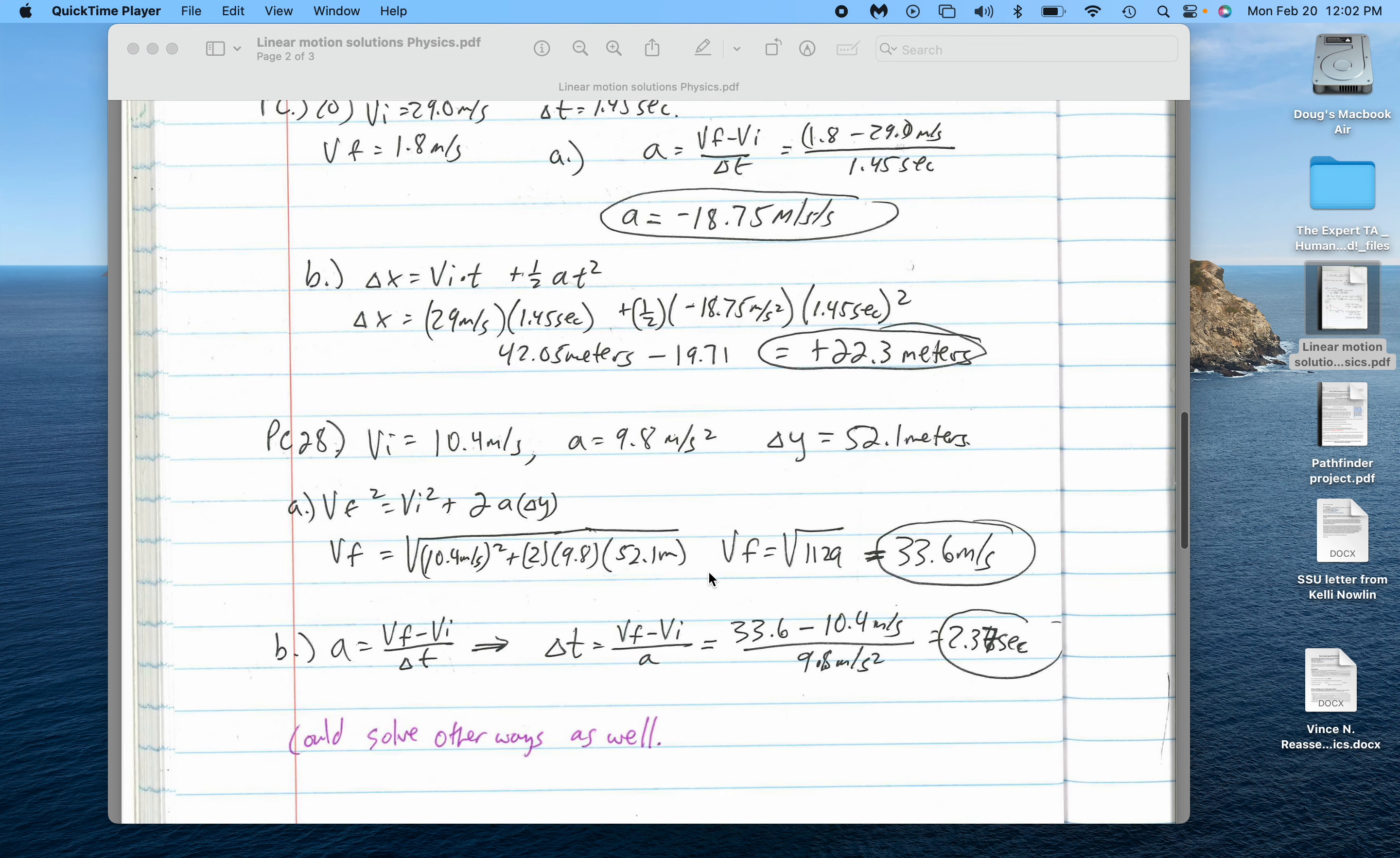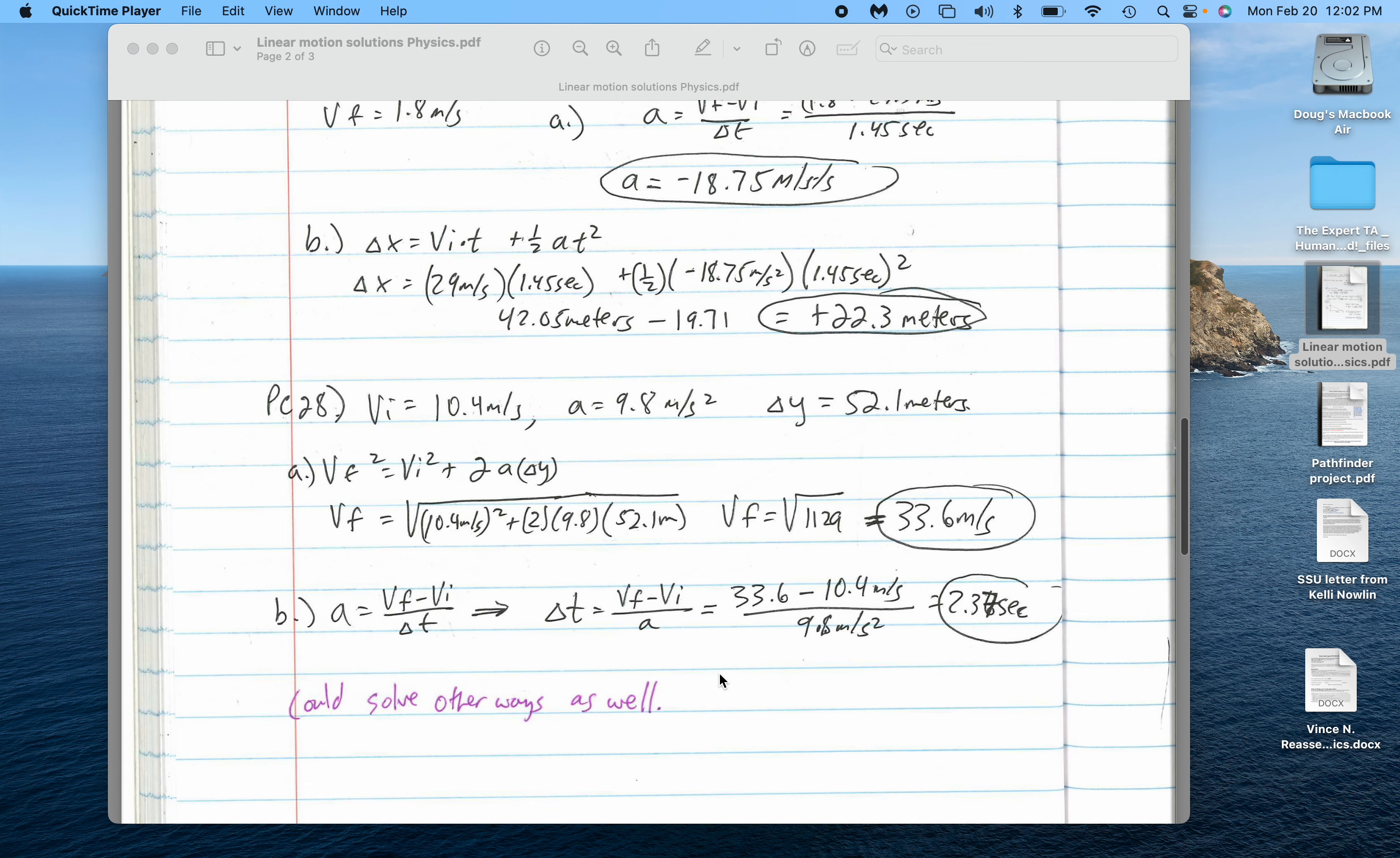For PC-28, could have solved this multiple ways, but essentially you've got skydiver Luke out below, reached a terminal speed of 10.4 meters per second as he approached the ground with his parachute. During an attempt to snap one last photo, he drops it from a height of 52 meters above the ground.